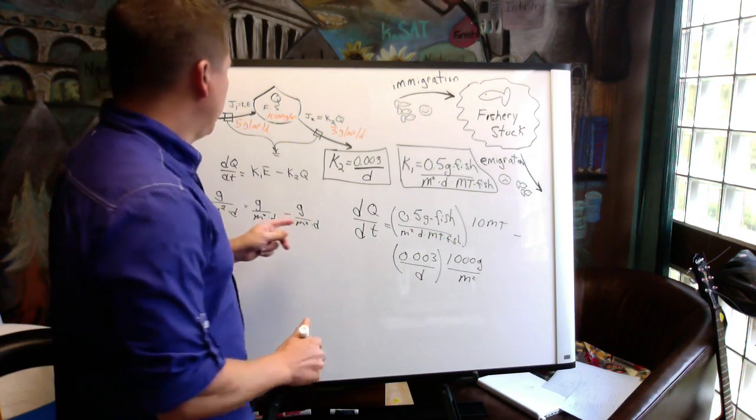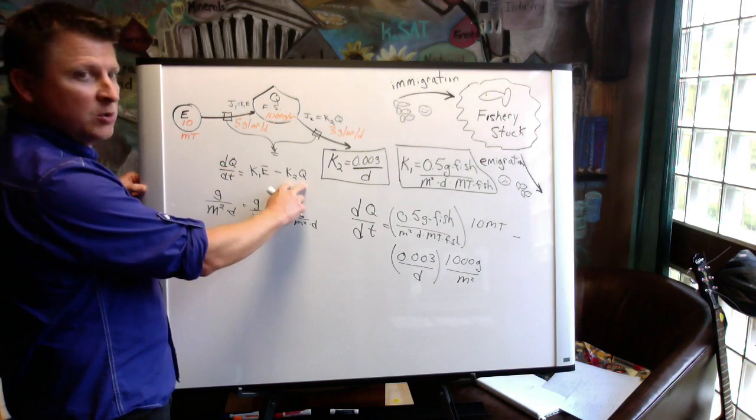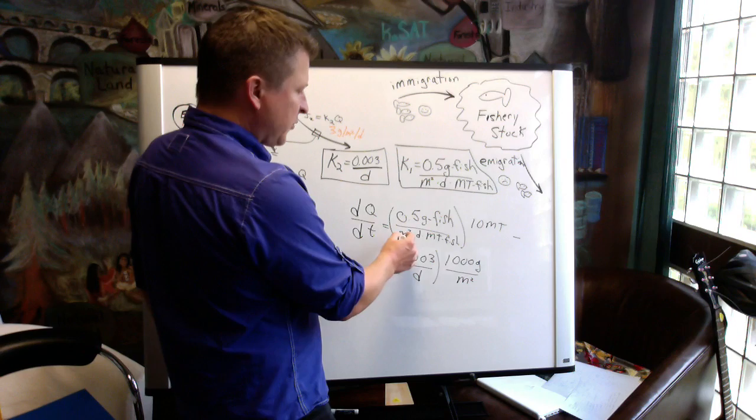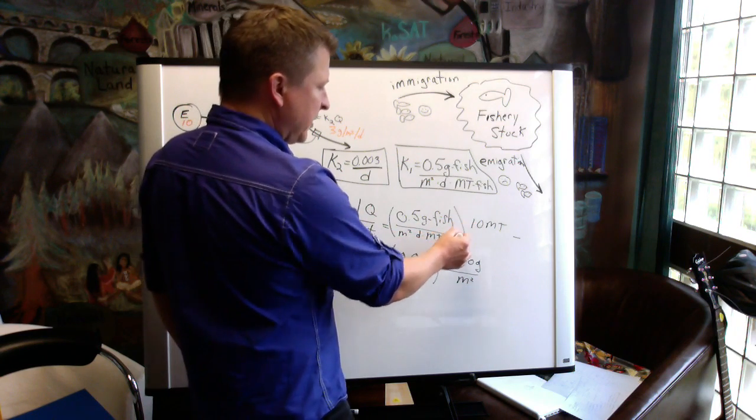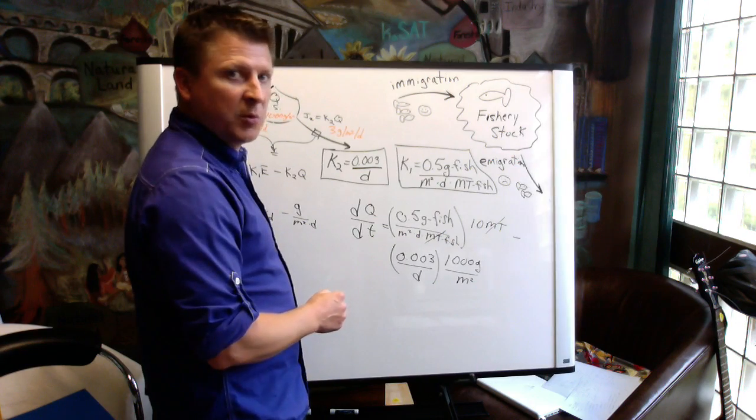So each term, meaning K1 E is a term, K2 Q is a term, should have the units of grams per square meter per day. Grams of fish per square meter per day. Metric tons times metric tons. The metric tons cancel out. We're left with grams per square meter per day.